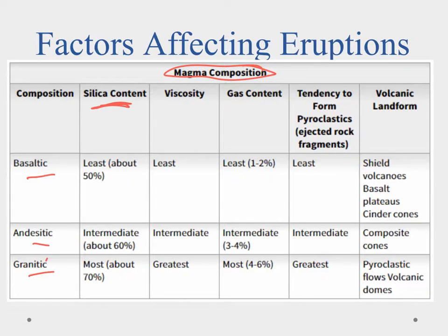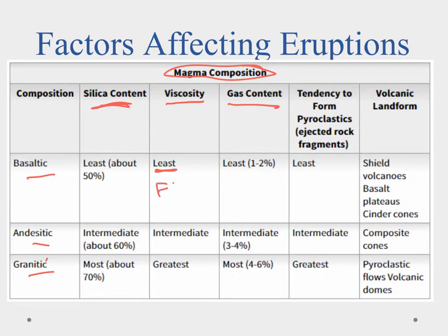For eruptions, however, we're going to look at viscosity and gas content. Viscosity is resistance to flow — something highly viscous would be like maple syrup, and something with low viscosity would be like water that flows easily. Basaltic magma is going to be least viscous and will flow, while granitic is going to have the greatest viscosity and will just ooze.